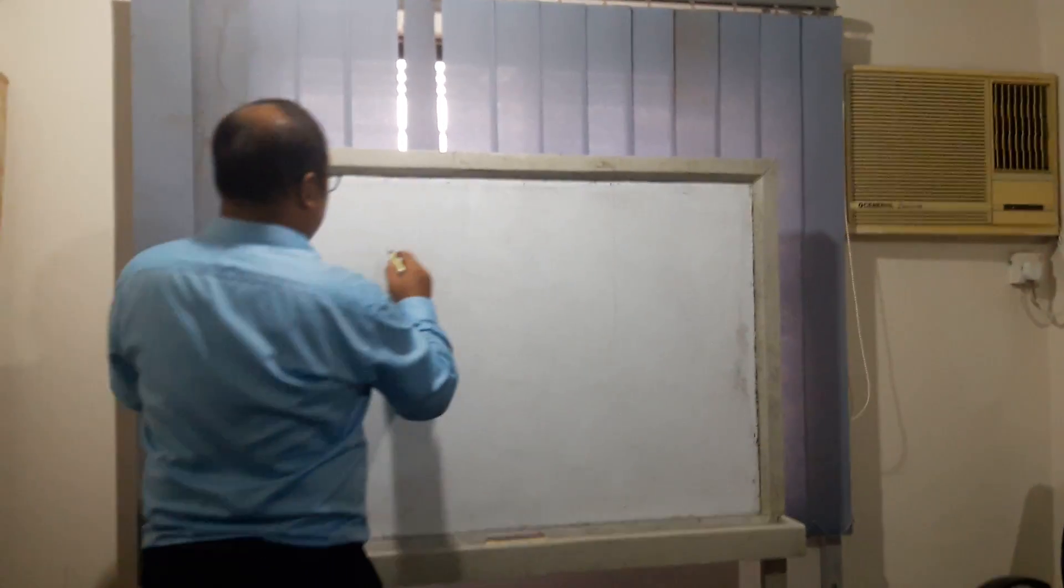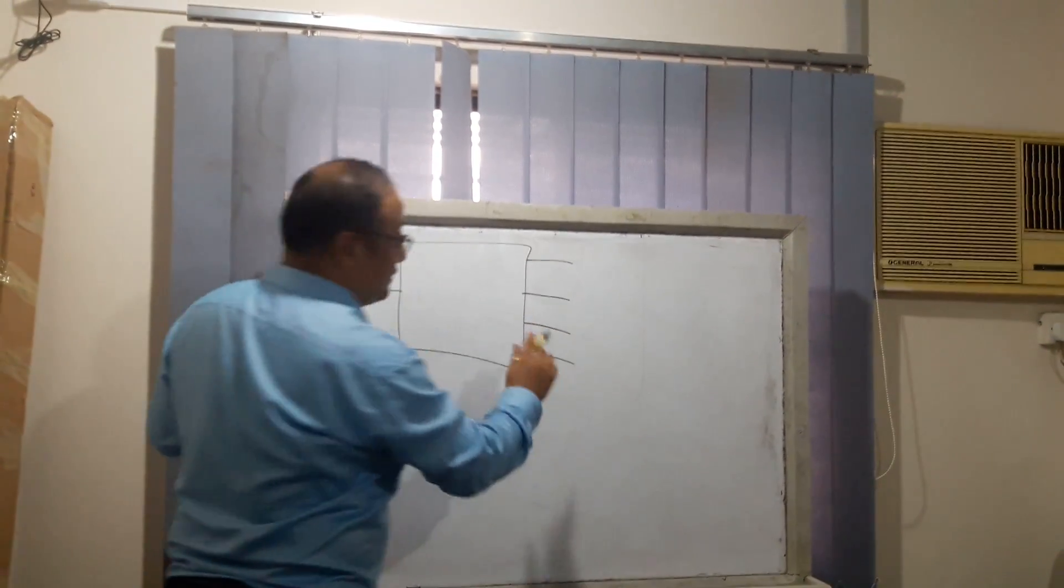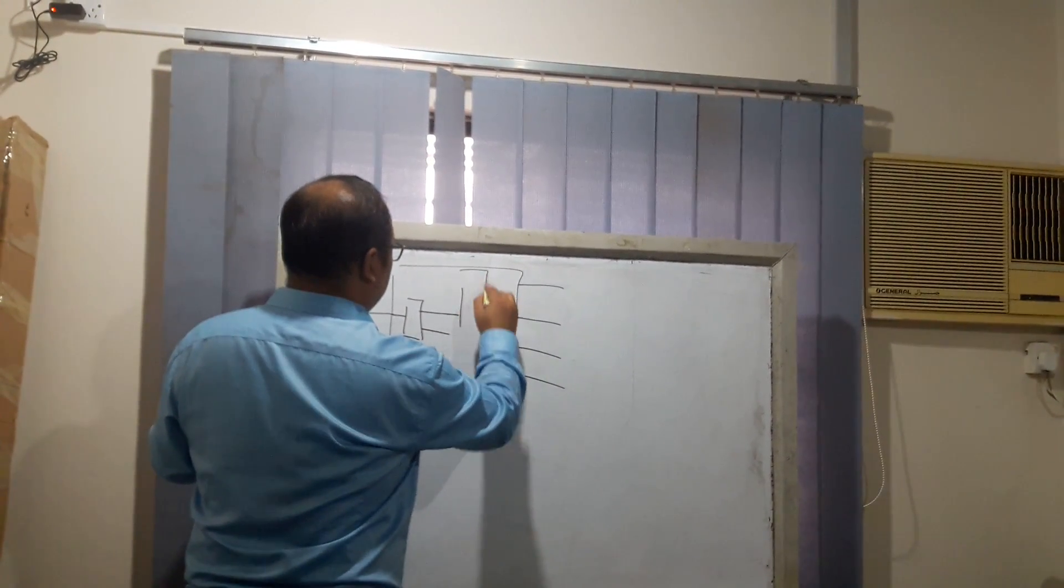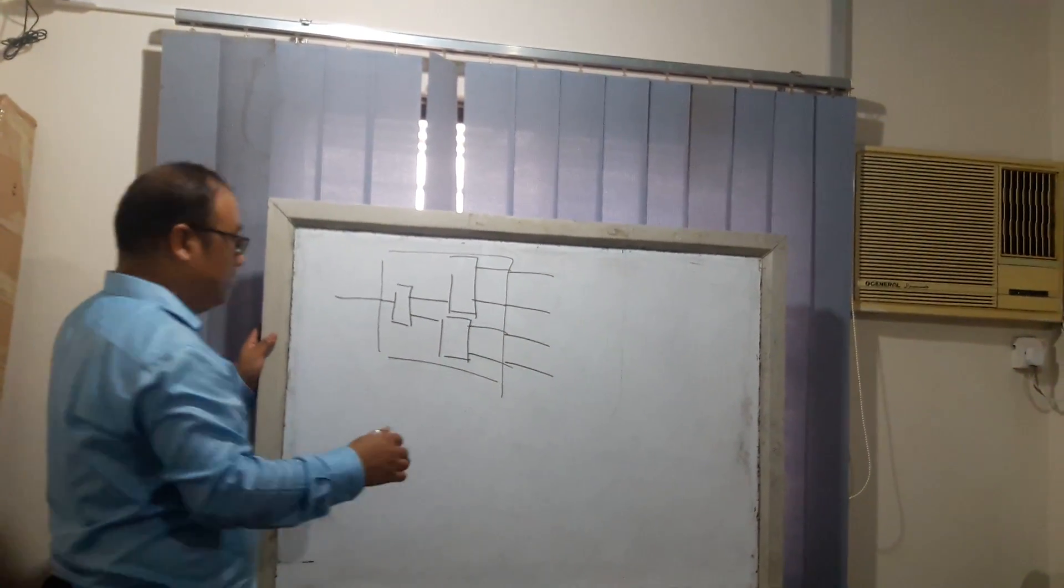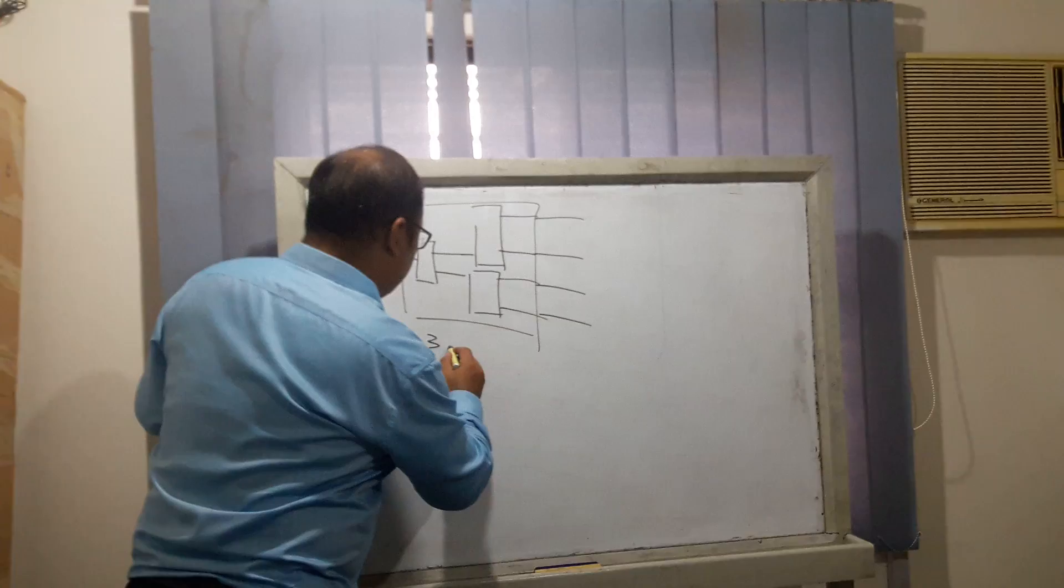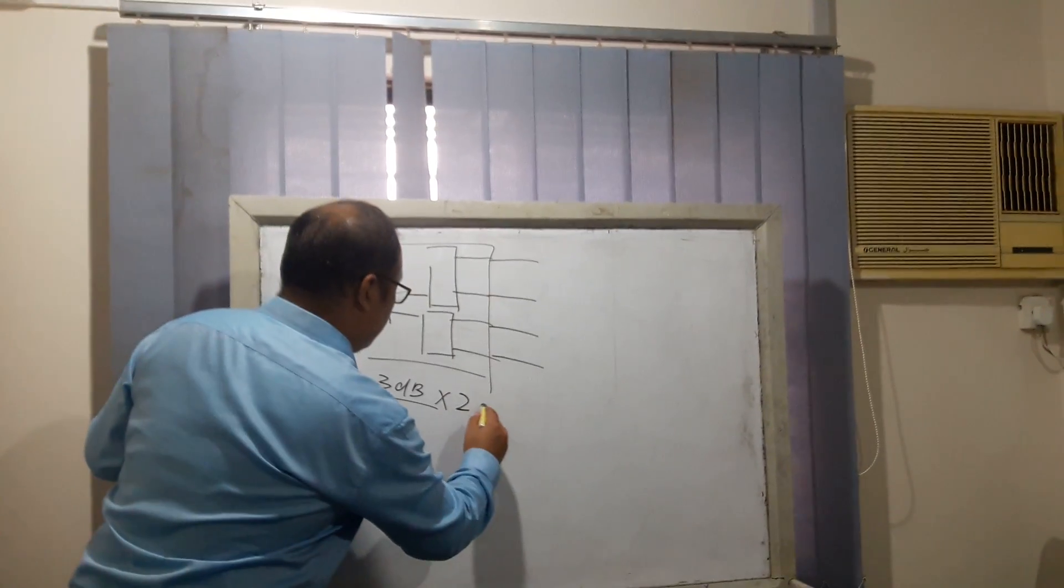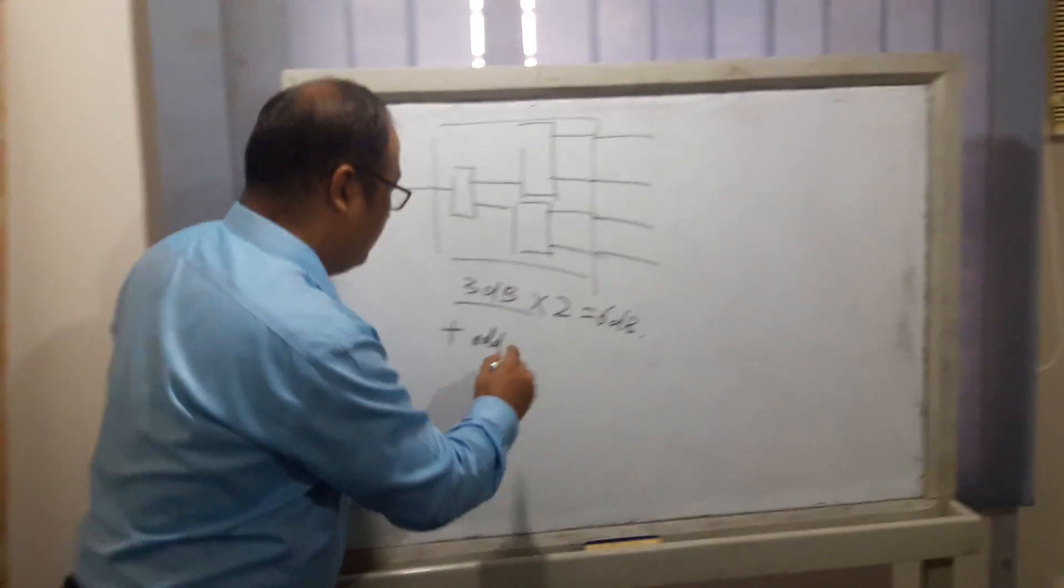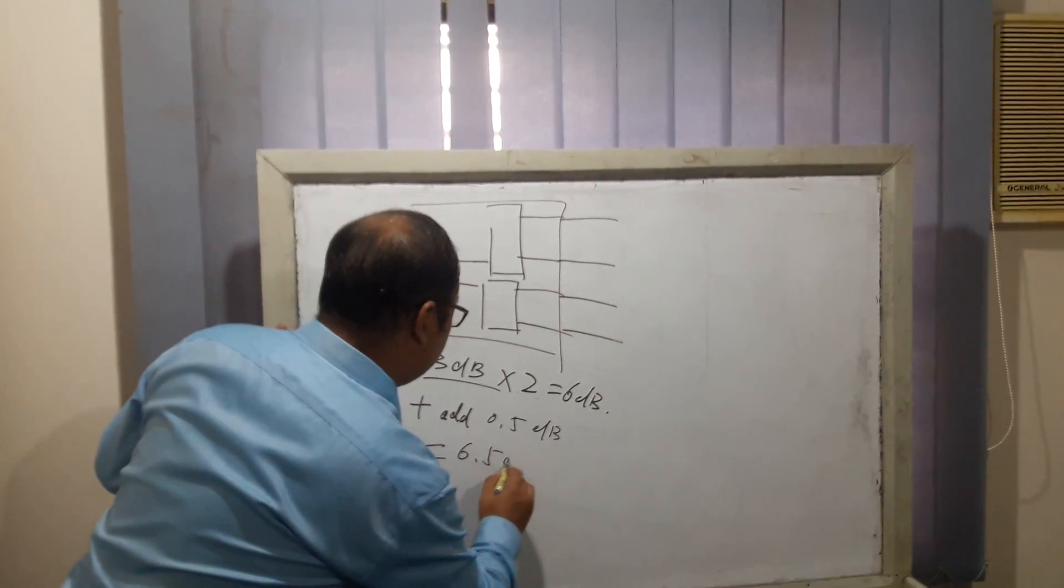As we know, the 1:4 splitter is just like two stages of 1:2 splitters. So the attenuation of 1:4 is 3 dB for 1:2 into 2, which equals 6 dB, plus additional attenuation of 0.5 dB, totaling 6.5 dB.